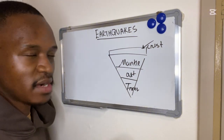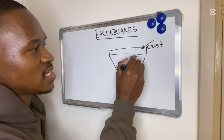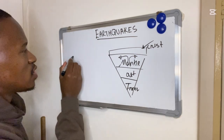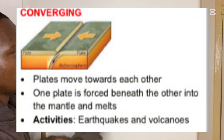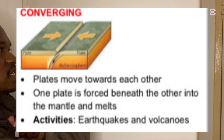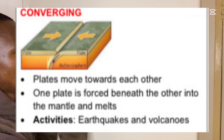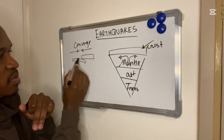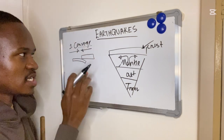These plates float above the mantle because there are convection currents in the mantle. These convection currents cause the plates to converge — you can see the arrows coming together. When they converge, the plates are colliding, and one of the plates will go under; it will be subducted. We call this a convergent boundary.